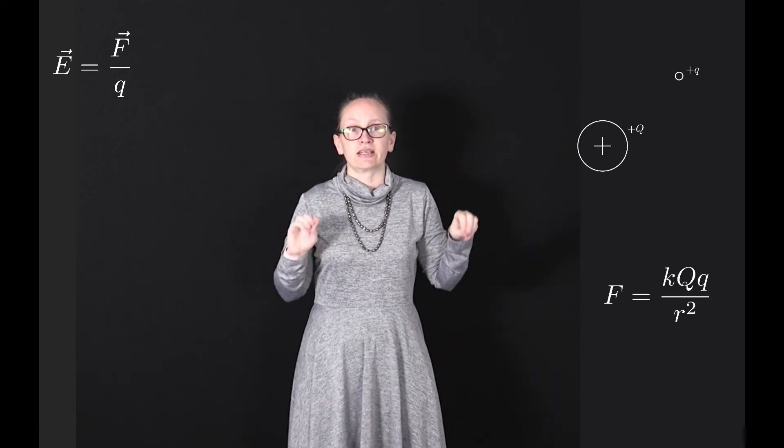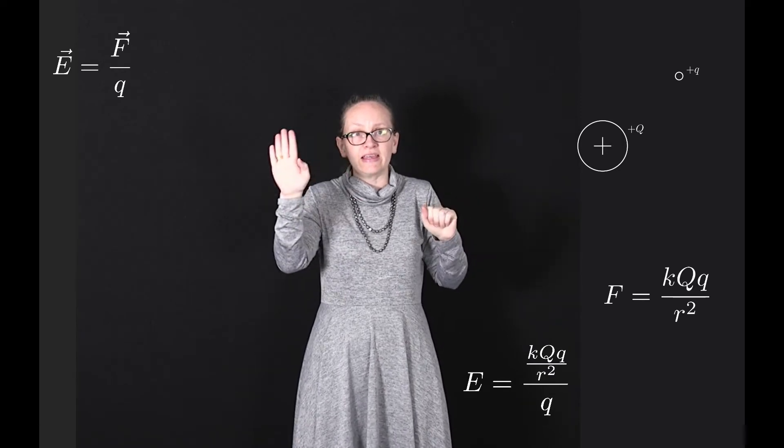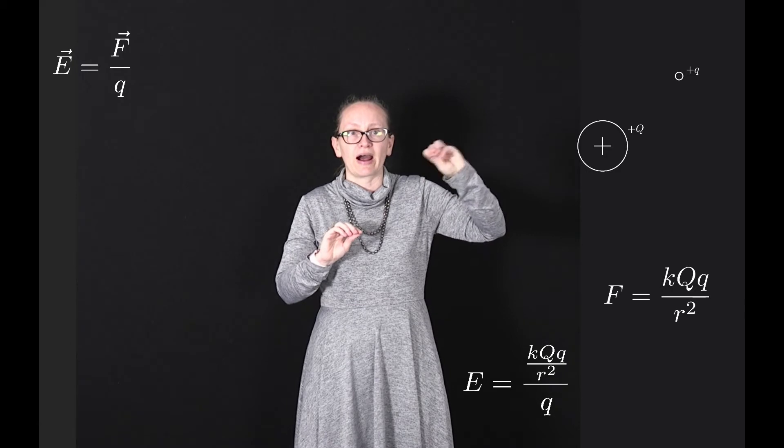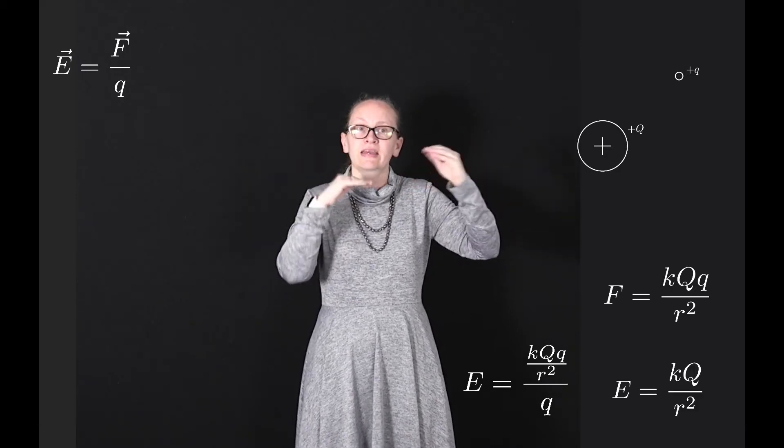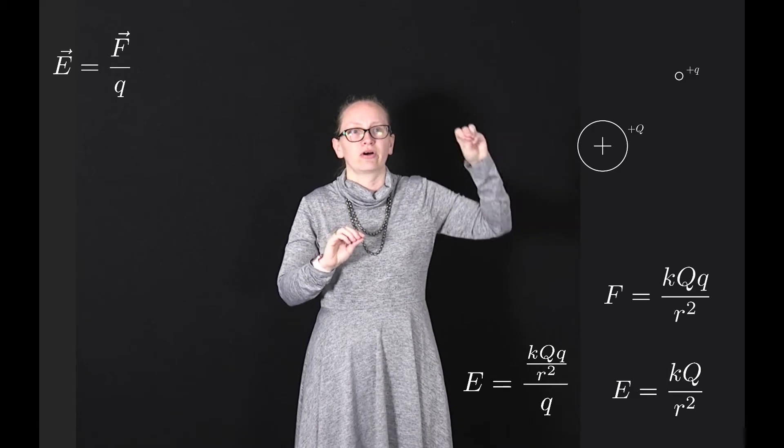Substituting into this equation our expression for F, we can see that E is going to equal kQq divided by r squared q, and then the lowercase q's will cancel out so this becomes kQ on r squared.